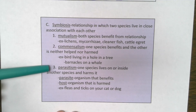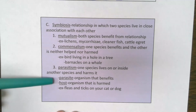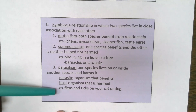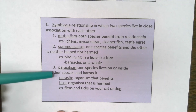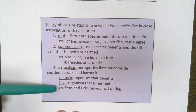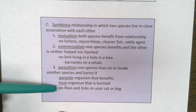The third type is parasitism. This is where one species lives on or inside another species and harms it. You have two organisms: the parasite, which benefits, and the host, which is harmed — like your dog or cat with fleas and ticks. Fleas and ticks are external parasites; a parasitic worm like a tapeworm would be an internal parasite inside the animal's body. One species benefits and the other is always harmed in parasitism.